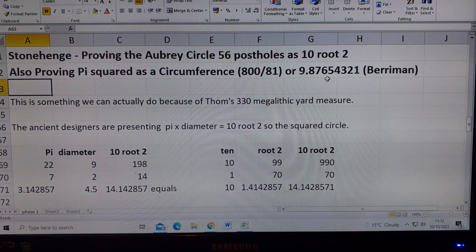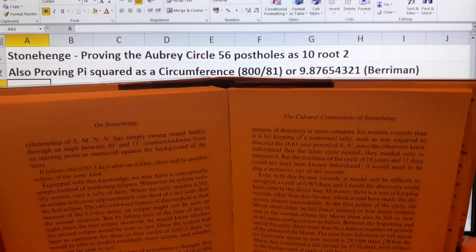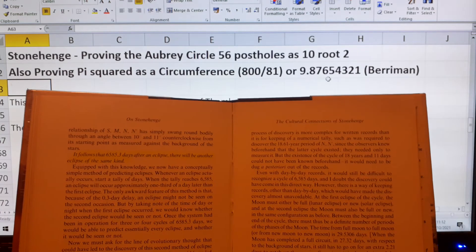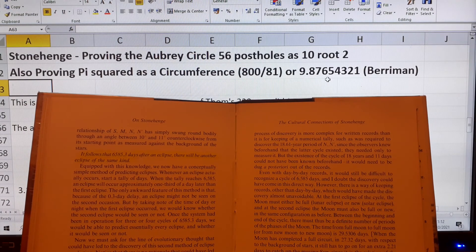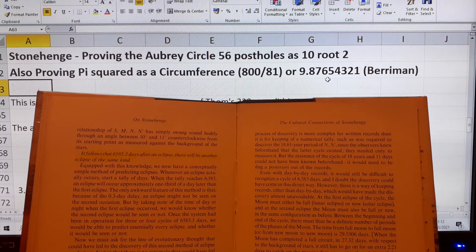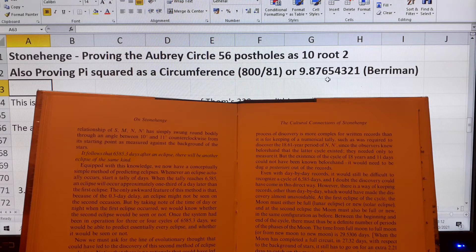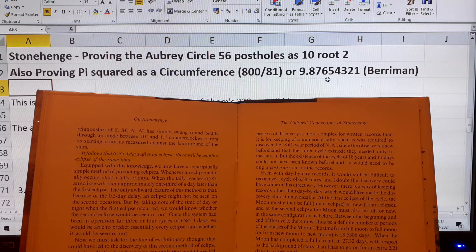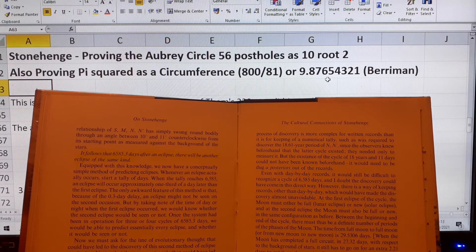Now I'll get Sir Fred Hoyle's book. This is really interesting what he says. This is the book to read to really understand what's going on at Stonehenge. On page 100 at the top, where I've identified it in yellow, he says it follows that 6585.3 days after an eclipse, there will be another eclipse of the same kind. And he's using 56 post holes to prove it.